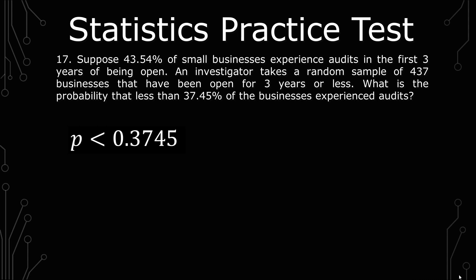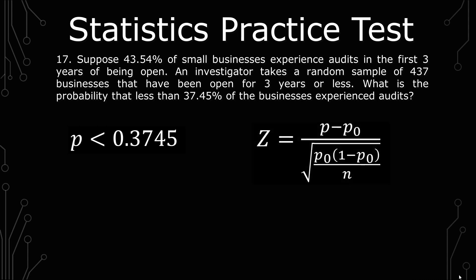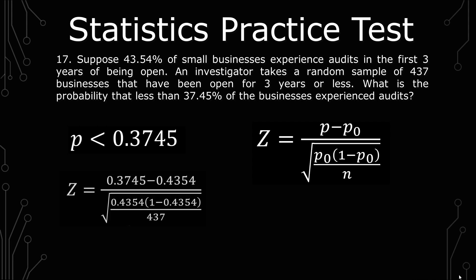The z-score formula is the p that you're asked to approximate minus the established p, over the square root of the established p times 1 minus the established p over n. That gives us z equals 0.3745 minus 0.4354, over the square root of 0.4354 times (1 minus 0.4354) over 437, which gives us a z-score of negative 2.57.